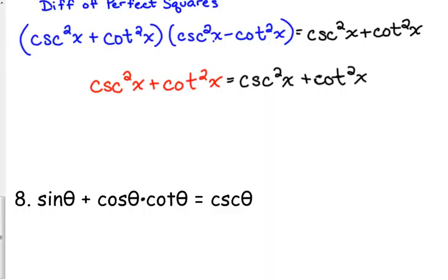Now, there's nothing squared, so we can't do Pythagorean yet, and I say yet on purpose. So our only option really is to change cotangent into cosine over sine.